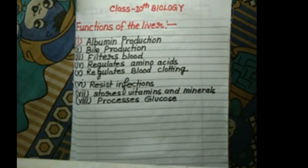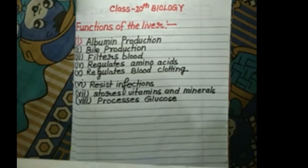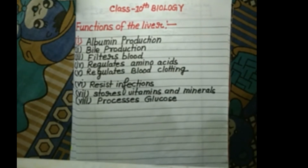The liver stores vitamins A, D, E, K, and B12. Vitamins are categorized into two main categories: water-soluble vitamins and fat-soluble vitamins. Water-soluble vitamins are B and C. The other vitamins — A, D, E, and K — are fat-soluble vitamins, which are stored in the liver.